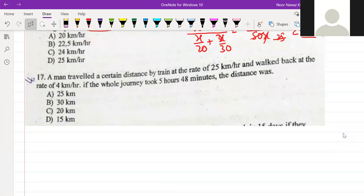So for the total time, we set up the equation as x by 25 plus x by 4, distance upon speed.